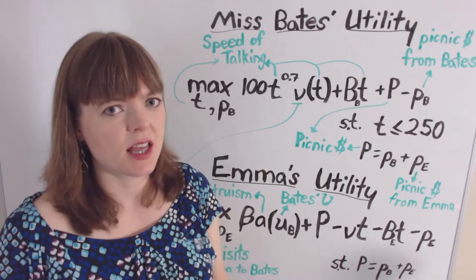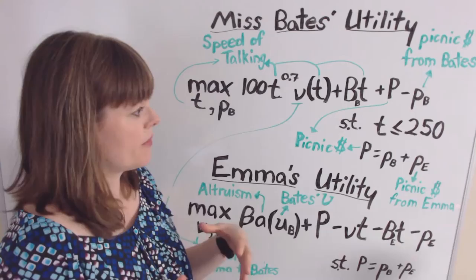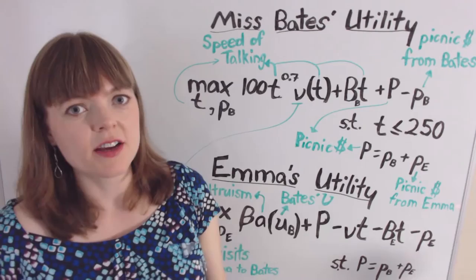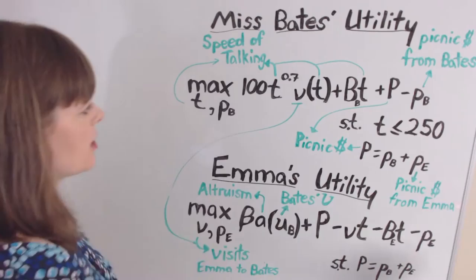Therefore the hero of Emma's world, Mr. Knightley, believes that Emma should go visit Miss Bates more often, and we'll see how that plays out in the model. So those are the choice variables — the decisions that these characters are going to make.